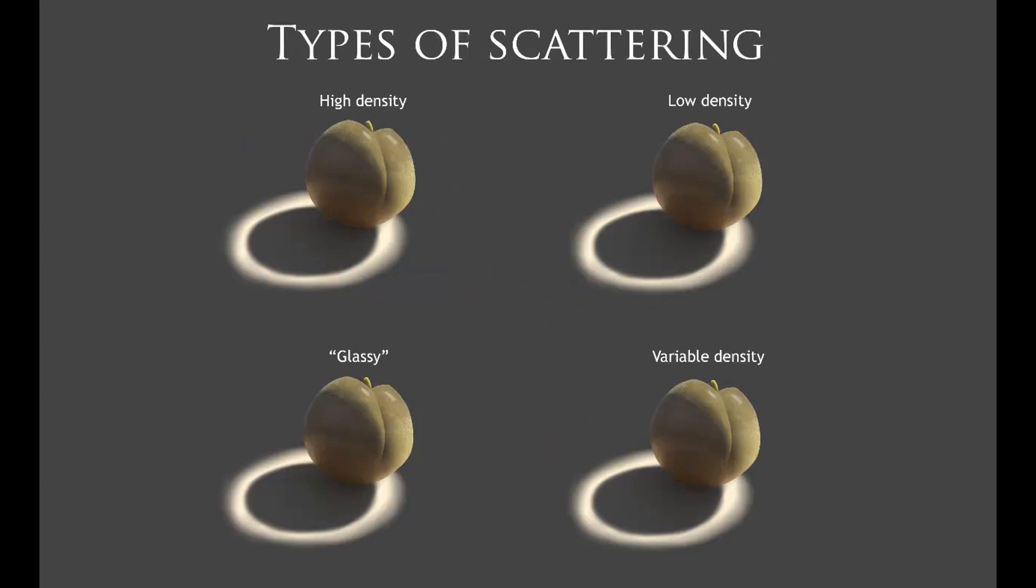So we actually end up with at least four different types of subsurface scattering. Now there may be more, but these are the ones that I thought of to share with you today. And I'm giving these the names of high density, low density, glassy, and variable density subsurface scattering.